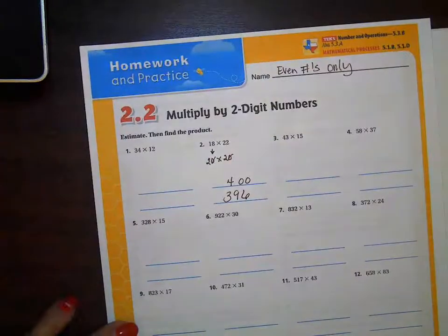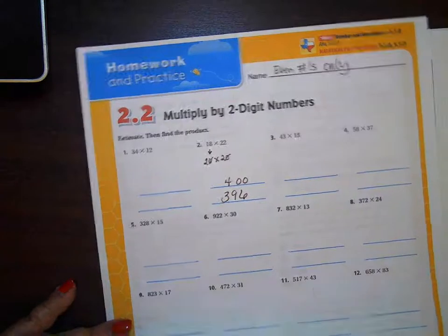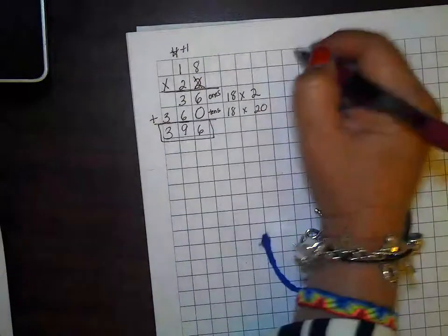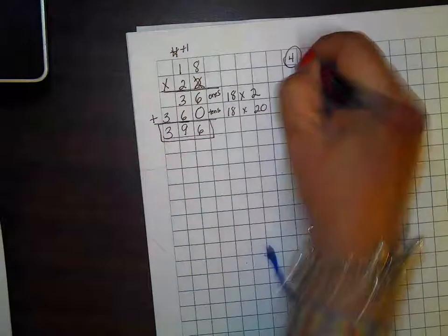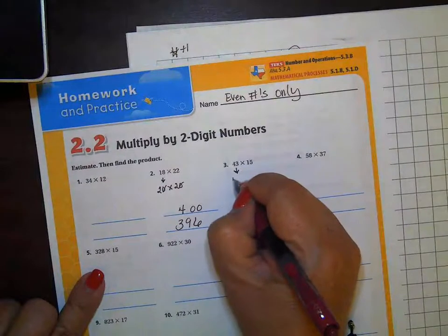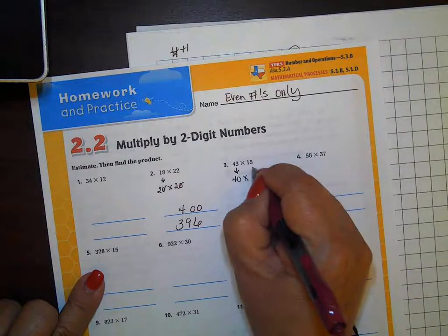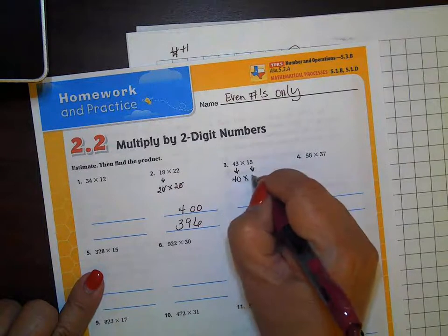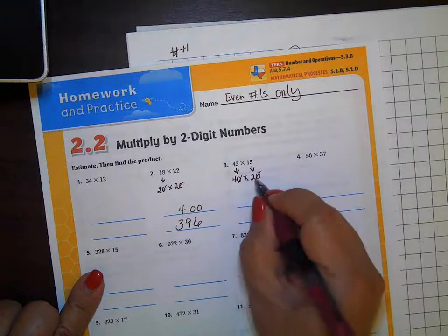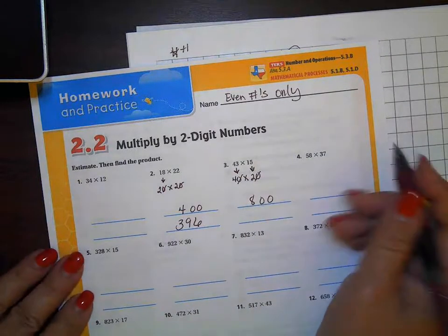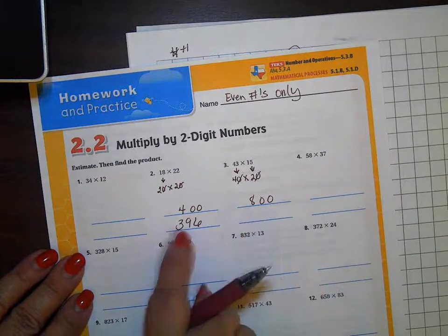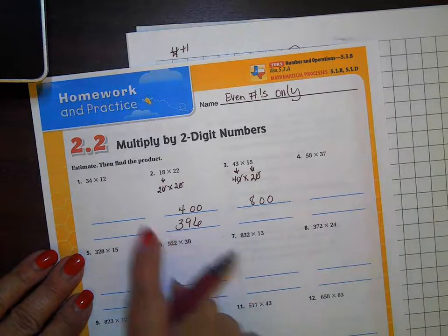Anytime you need to pause this video, please feel free to do so so you can catch up on the notes. Number four: I have 43 and 15. 43 is closest to 40, and 15 is closest to 20. I have two zeros, so I'm going to place those in my product.